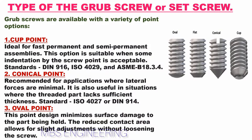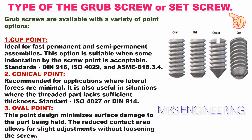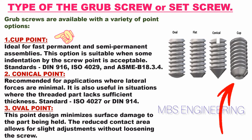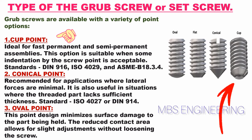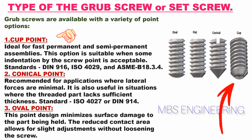We will learn the different types of grub screws or set screws. Grub screws are available with different point options. First, the cup point set screw: ideal for fast, permanent, and semi-permanent assemblies. This option is suitable when some indentation by the screw point is acceptable. Its standards are as per DIN 916, ISO 4029, and ASME B18.3.4. Please refer to the picture of the cup point set screw for better understanding.